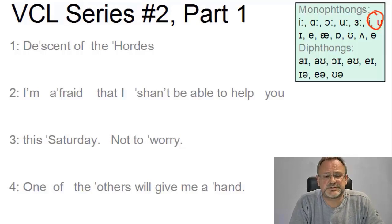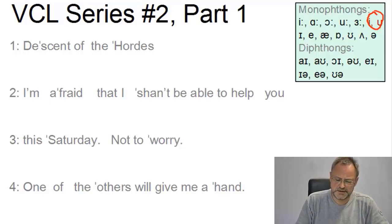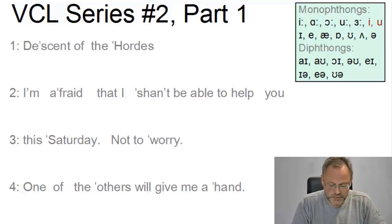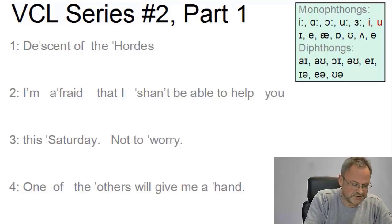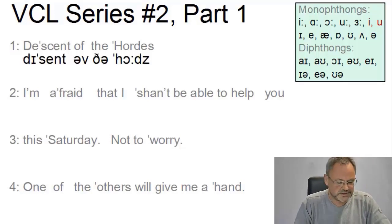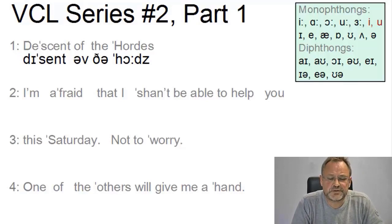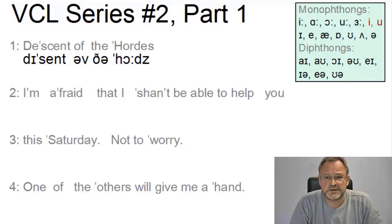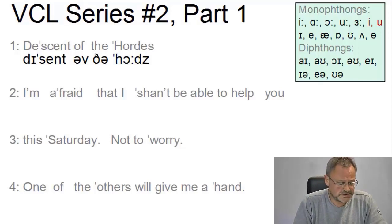Since the consonants are easier to remember, we don't need them. Let's start and look at the solution line by line. Here's the first: 'Descent of the Hordes'. We have two weak forms here, but we will talk about them later. Quite interestingly, the stressed syllable in 'descent', even though it's a noun, is the second syllable.